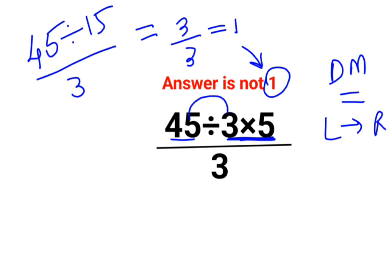Whatever operation happens first from your left hand side has to be done first. So first you will do 45 divided by 3 which is 15 multiplied by 5 over 3. So this is coming out to be 75 upon 3.